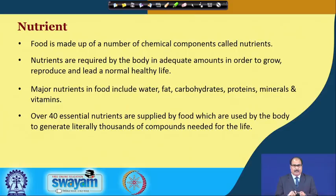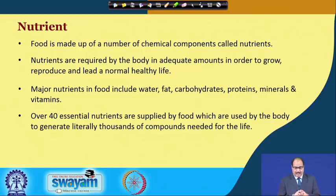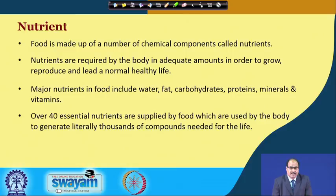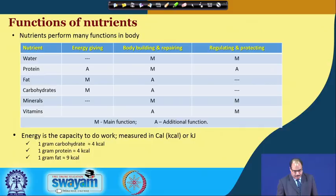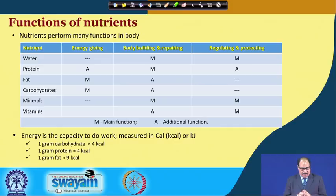Food is made up of a number of chemical components called nutrients. These nutrients are required by the body in adequate amounts in order to grow, reproduce and lead a normal healthy life. Major nutrients in food include water, fat, carbohydrates, proteins, minerals and vitamins. Over 40 essential nutrients are supplied by food, which are used by the body to generate literally thousands of compounds needed for life. These nutrients have specific roles or functions to perform in the body. For example, the main function of water is body building and repairing, as well as regulating and protecting body processes.